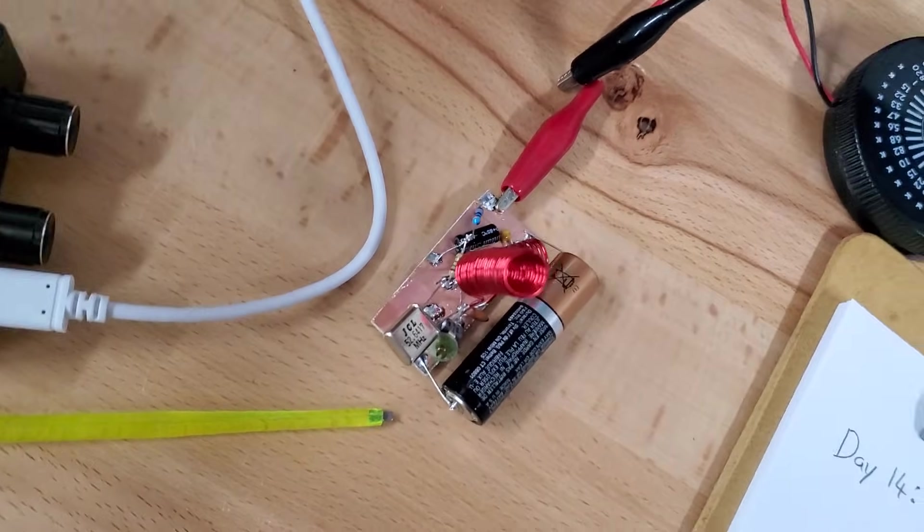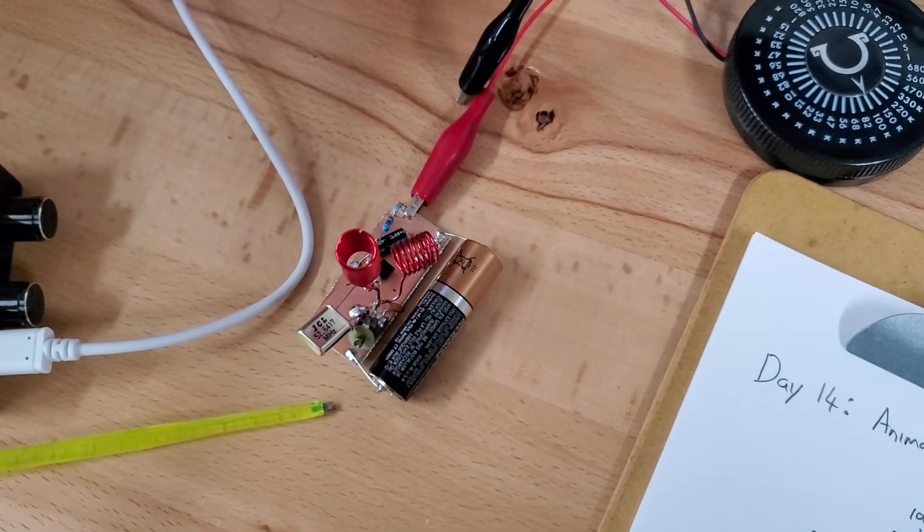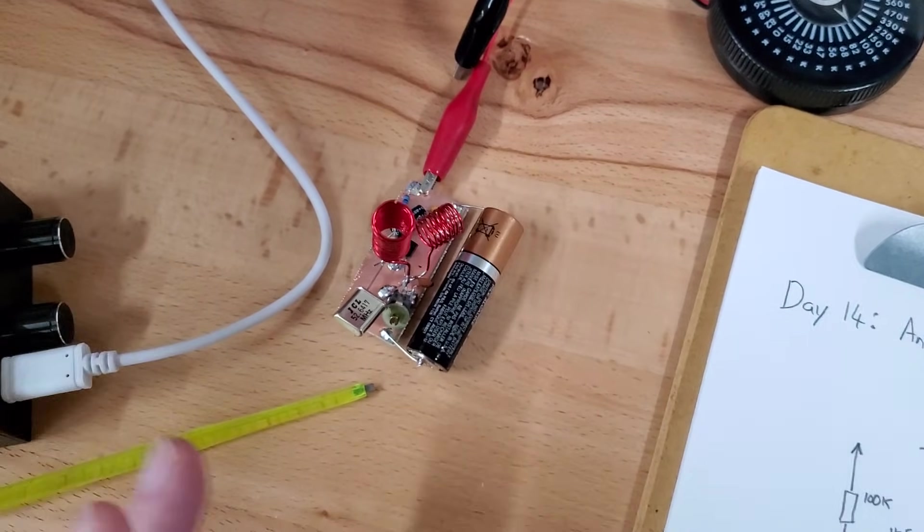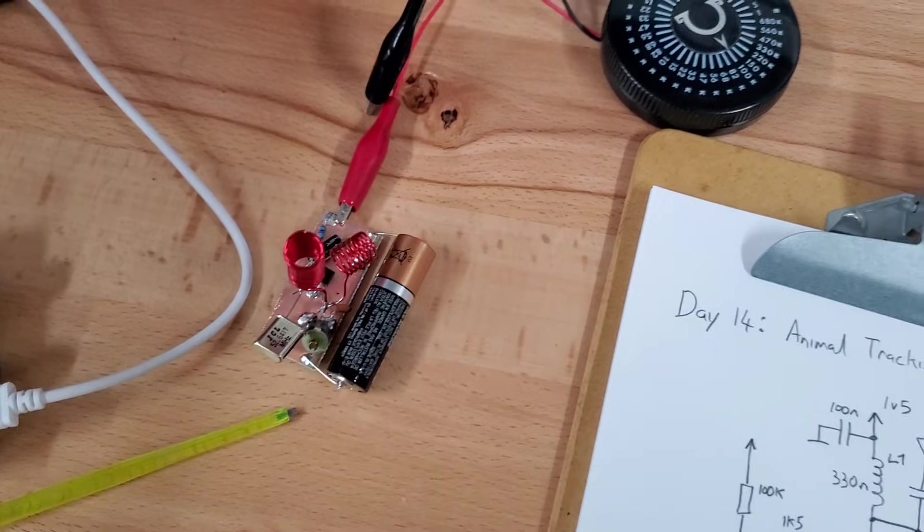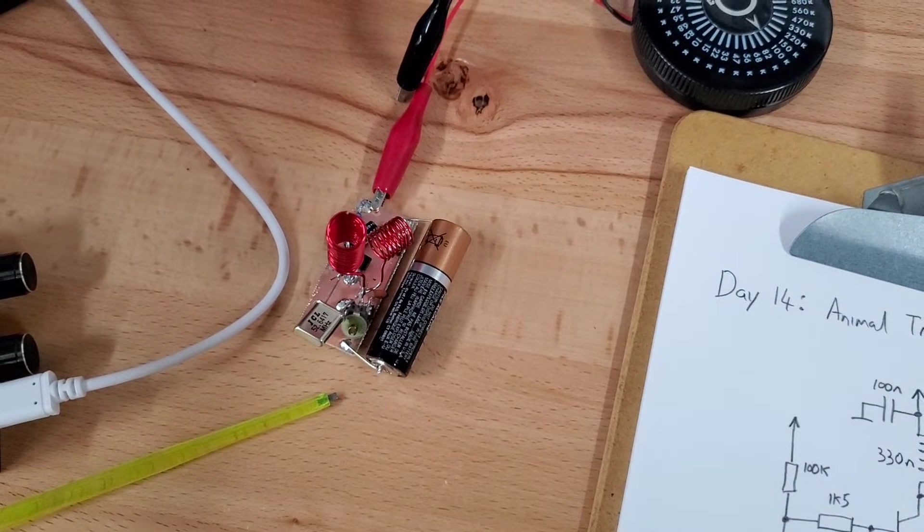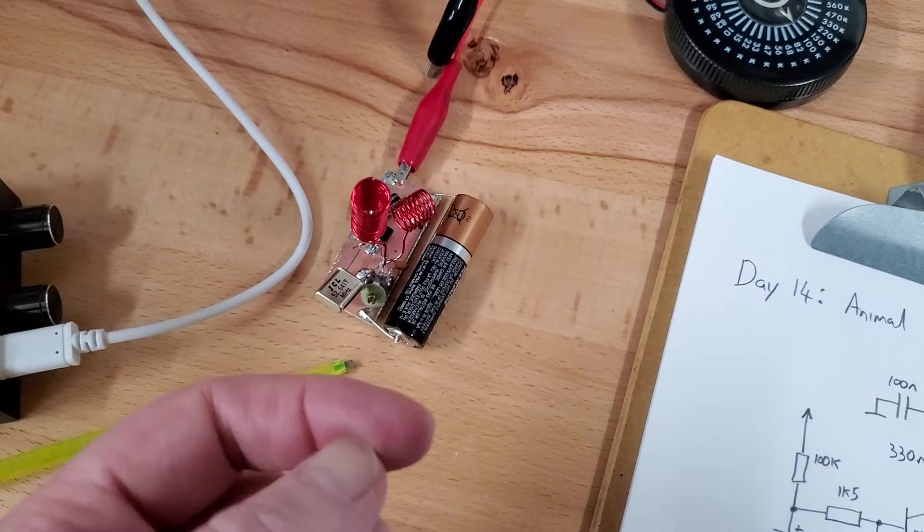It's still not crazy small. You could fit it in a film canister along with the battery, which would last a very long time because it doesn't consume very much current. For a medium to large animal it'd be fine. If you wanted it for a small animal, you definitely want to build it in surface mount form, and it could be thumbnail-sized or even smaller.